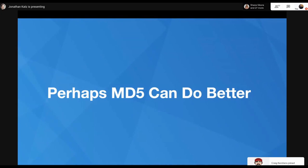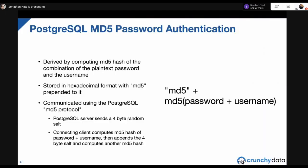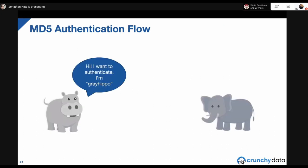So the plain text method doesn't do much for us. Maybe MD5 can do better. MD5 password authentication isn't just storing the password with an MD5 digest — it's an authentication method with a protocol. The way it works: take the MD5 hash of the plain text password appended with the username. So if your password is 'postgres' and username is 'jcats,' you take the MD5 hash of 'postgresjcats,' prepend the string 'md5,' and that's what's stored in the Postgres user catalog. This is communicated using the MD5 protocol — Postgres sends a nonce as part of the process.